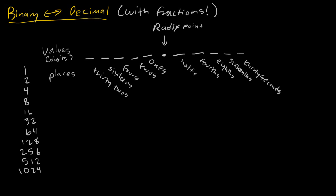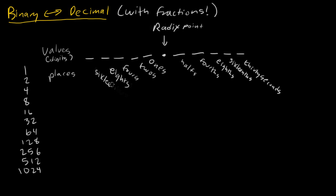I found a mistake already — I listed 1, 2, 4, 16... that's wrong. If you noticed that earlier, good for you; if you didn't, you're in good company. The next power of 2 after 4 is 8, so let me fix that. So our places on the whole-number side are 1, 2, 4, 8, and 16, and on the fractional side we have 1/2, 1/4, 1/8, 1/16, and 1/32.